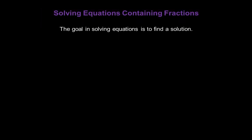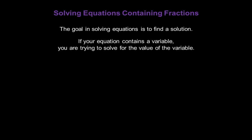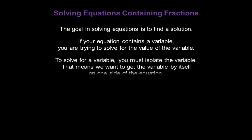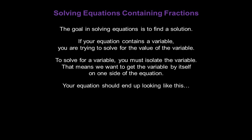The goal in solving equations is to find a solution. If your equation contains a variable — a letter — you're trying to solve for the value of that variable. To solve for a variable you must isolate it, meaning we want to get the variable all by itself on one side of the equation. Your equation should end up looking like: the variable equals a number — for example, p equals 16.